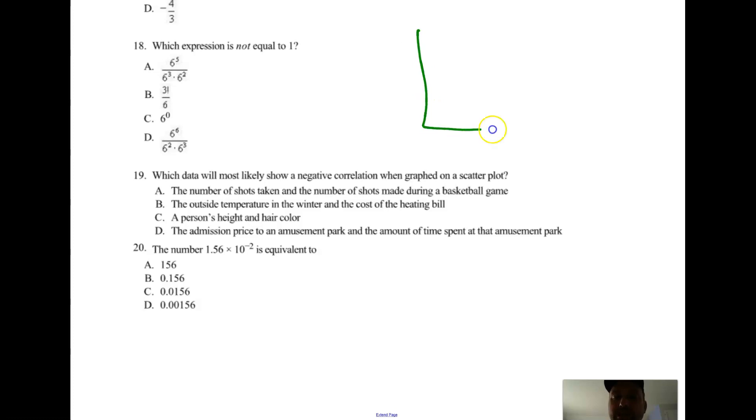For number 19, which data will most likely show a negative correlation when graphed in a scatter plot? Well if I graph a scatter plot and have a negative correlation, one variable better be increasing and one variable better be decreasing. A: the number of shots taken and the number of shots made during a basketball game - well that should be a positive correlation. The more shots you take, the more baskets you're going to make. B: the outside temperature in the winter and the cost of the heating bill - as your temperature decreases, your heating bill goes up. So you get a negative correlation. You should have choice B for 19.